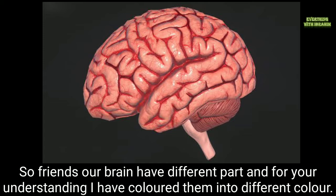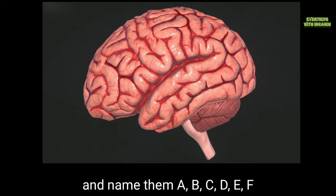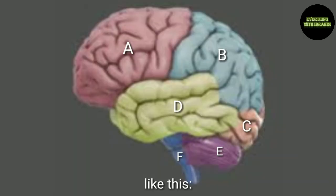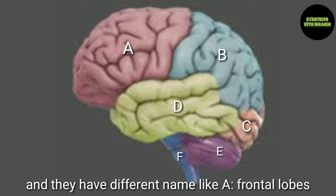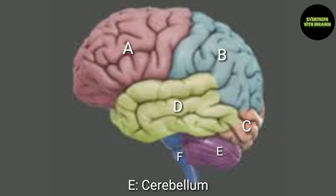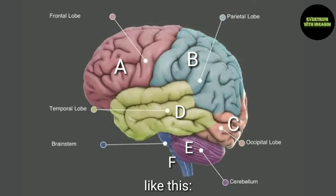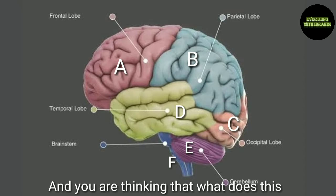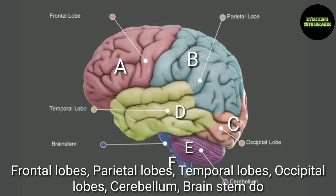Our brain has different parts, and for your understanding I have colored them into different colors and named them A, B, C, D, E, F. They have different names: A is the frontal lobe, B is the parietal lobe, C is the occipital lobe, D is the temporal lobe, E is the cerebellum, and F is the brain stem.